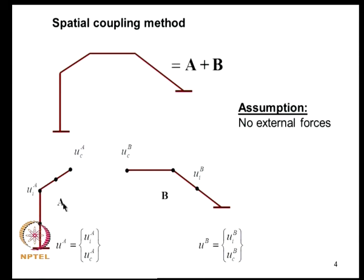The degrees of freedom at the coupling node constitute UC, and other degrees of freedom in the interior are the interior degrees of freedom UI. Similarly for system B, I have UI and UC. Clearly UC for A and UC for B need to be equal for compatibility relations to be obeyed.